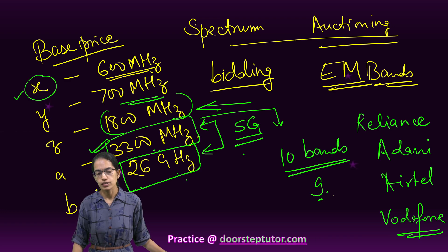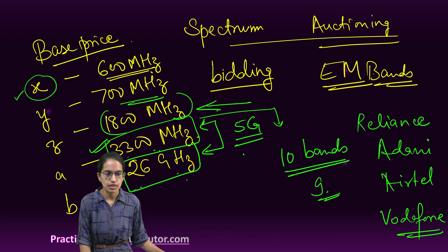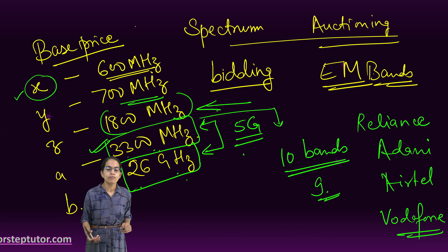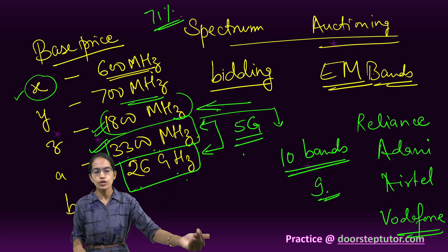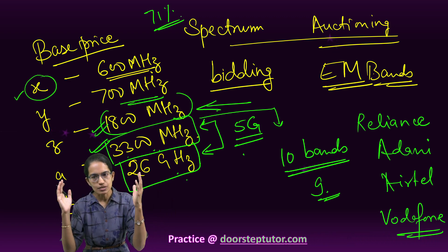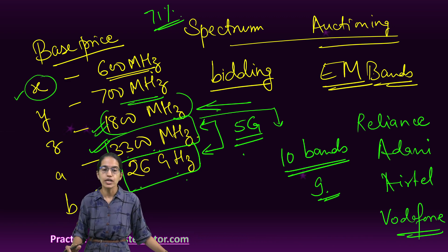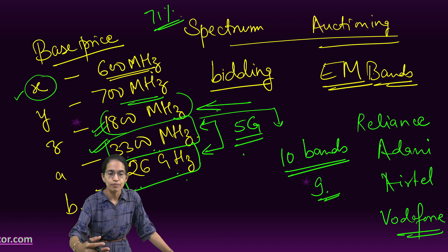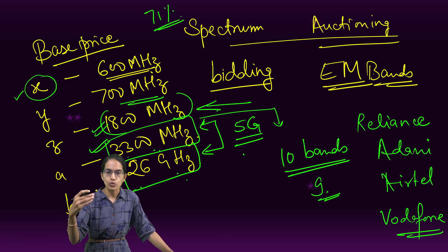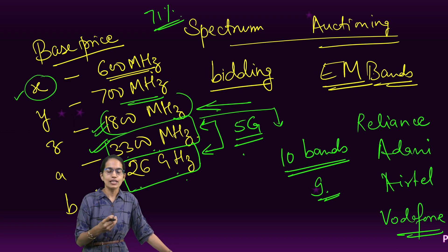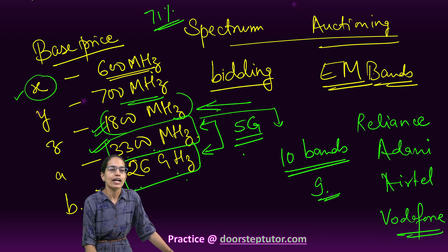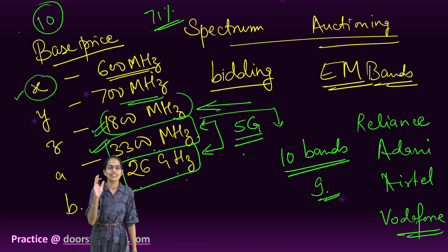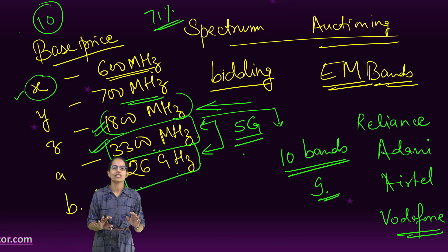Of the 10 bands auctioned in the recent auction, 9 of them were sold. The one band with no buyer was 600 megahertz, and there was rigorous bidding for 1800 megahertz. 71% of the total spectrums released in the market were sold in the 2022 auctions. Spectrum auctioning is an interesting phenomenon where the government brings spectrum bands for auction — a scarce resource sold across various spectral bands. This covers the basics of auctioning and spectrum auctioning.